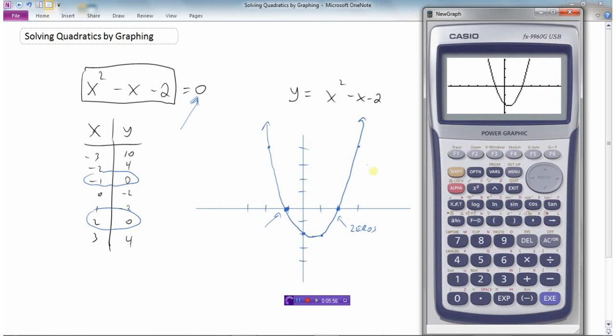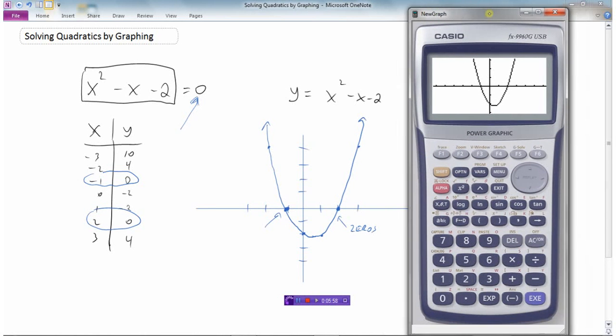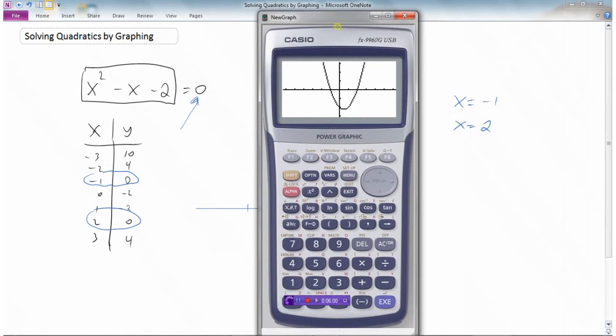Drawn the graph right here for us. And now we can go to our, on this calculator, if you go to gsolve, f5, graph solve. And what we're looking for are the roots, or the zeros of the function. So we hit f1 to find the roots. And it tells us that x equals minus 1. That was one of our solutions. And we hit the right arrow button. And it'll take us to the next one, which was x equals 2. And you can go back and forth between the two roots.